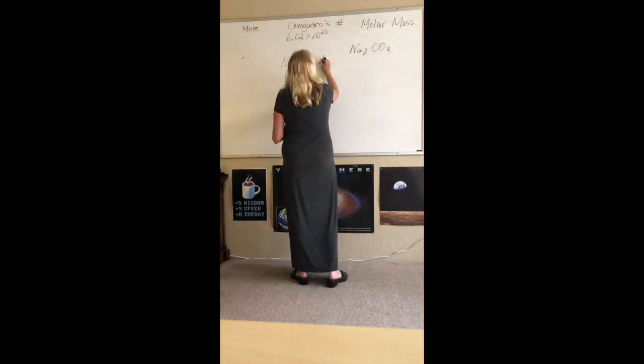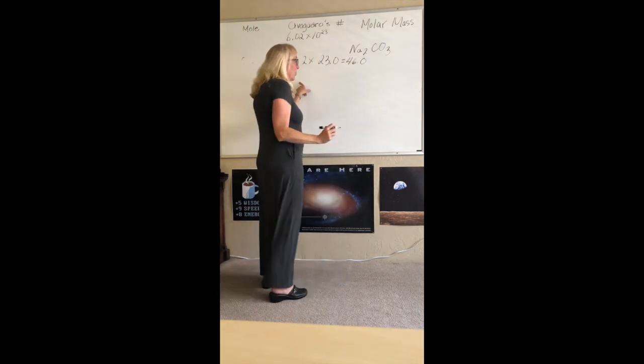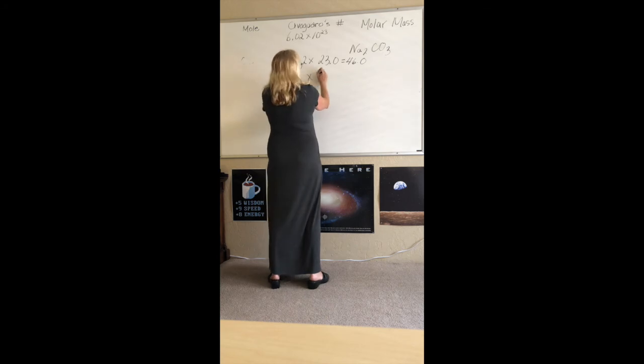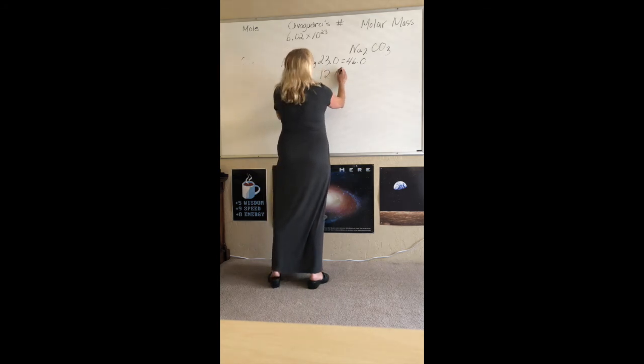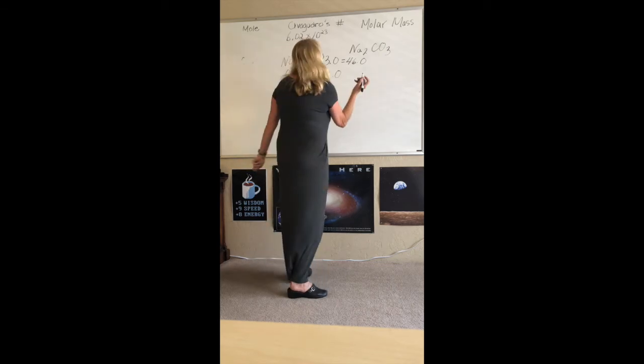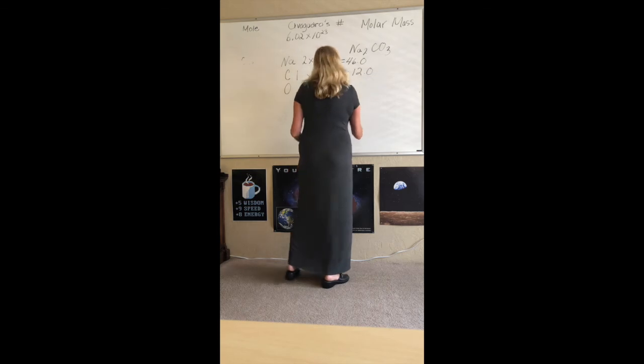We know that the atomic weight is 23.0. So two times that is 46.0. Now I have carbon and I have one times 12.0 because that's the atomic weight of carbon equals 12.0.